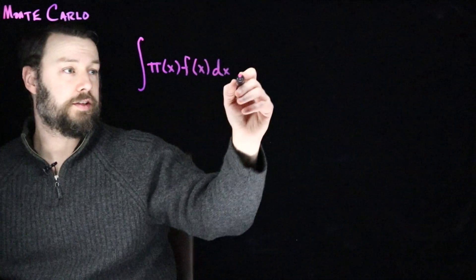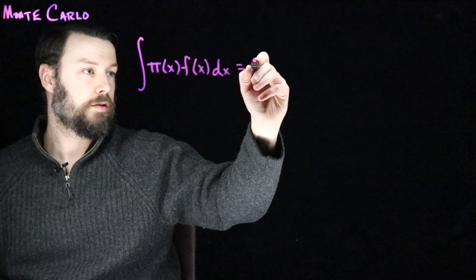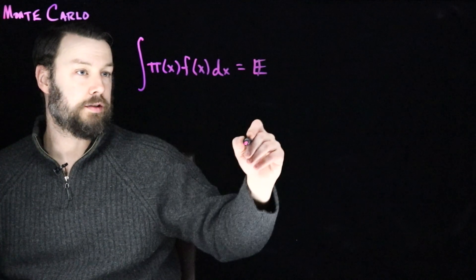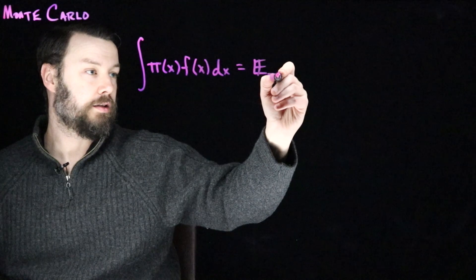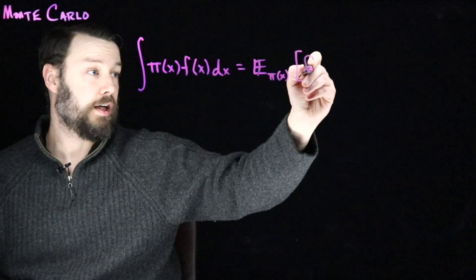So they could be things like this, and this we would say is an expectation, I'll say, under pi of x of the function f of x.